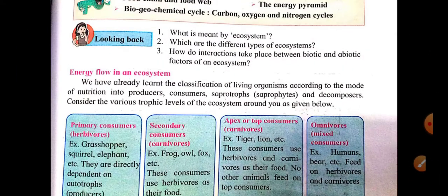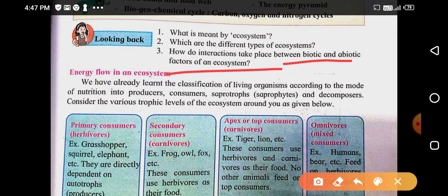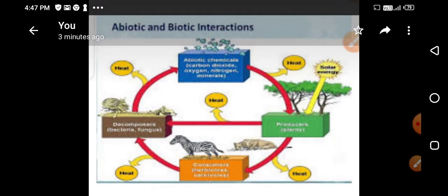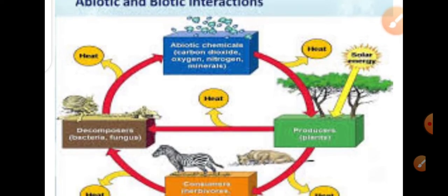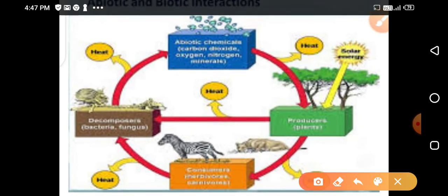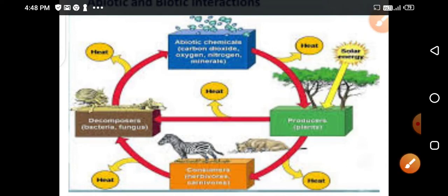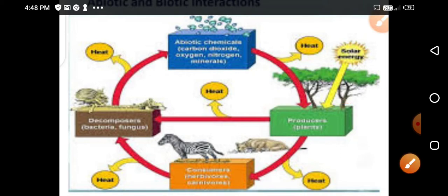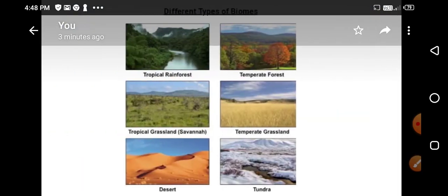How does interaction take place between the biotic and abiotic factors of the ecosystem? Biotic means living organisms, and abiotic means non-living factors like air, water, and temperature. Abiotic chemicals are taken in by producers; consumers depend on producers. When organisms die and become dead matter, decomposers start decomposition. In this way, interaction between biotic and abiotic factors goes on continuously in an ecosystem.